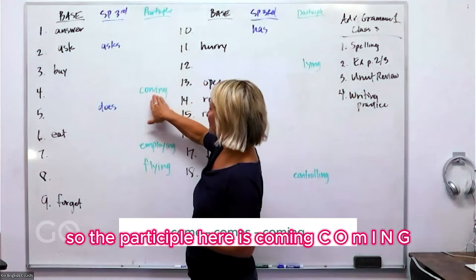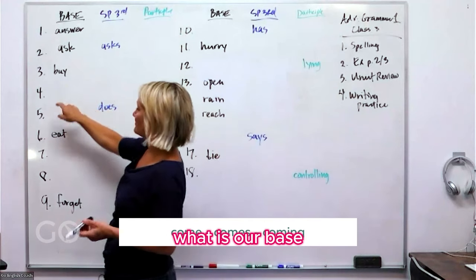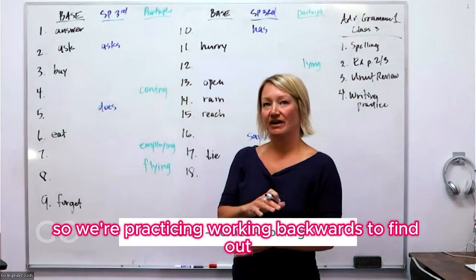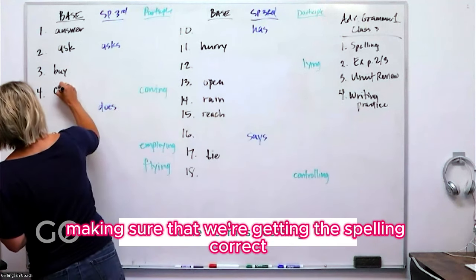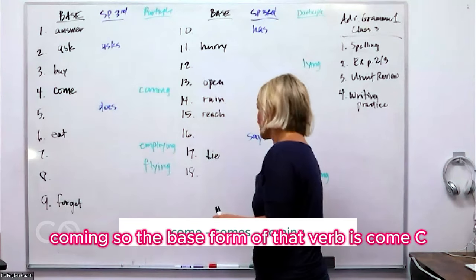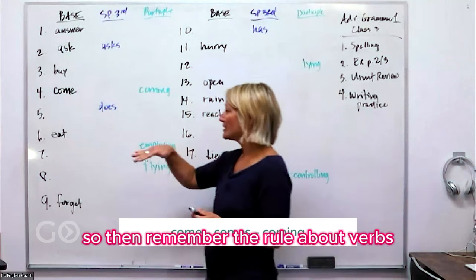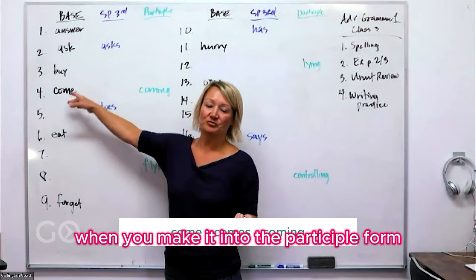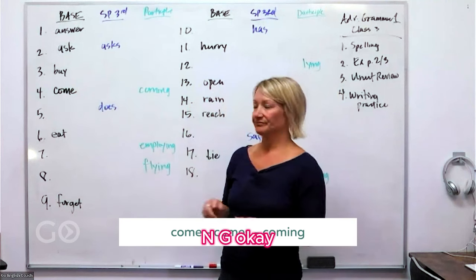The participle here is 'coming,' C-O-M-I-N-G. We're practicing working backwards to find the base and also checking the spelling. So the base form of that verb is 'come,' C-O-M-E, with that silent E at the end. Remember the rule: when a verb ends in a silent E and you make the participle form, you drop the E and add I-N-G.